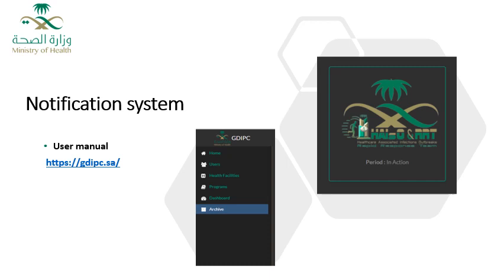This slide shows an image with the icon for reporting the healthcare-associated infection and the rapid response team outbreak. It explains the options for searching and entering the system data. For more information, please visit the reporting page on the attached link.